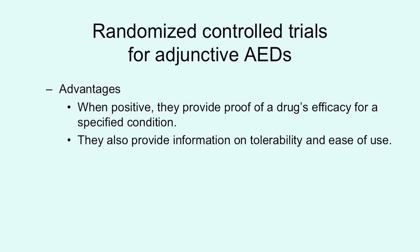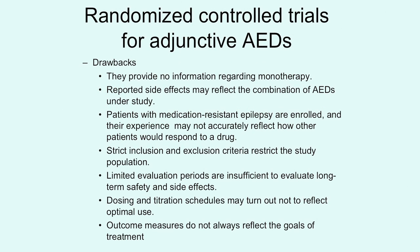The advantages of this kind of trial are that they do give you information about efficacy and provide some information on tolerability and ease of use. But there are also some drawbacks. One of the biggest concerns is that adjunctive trials don't really give you information about epilepsy monotherapy, or using the drug alone.